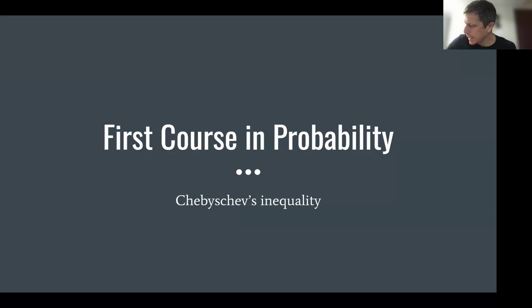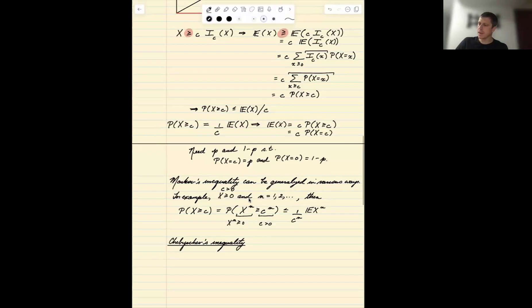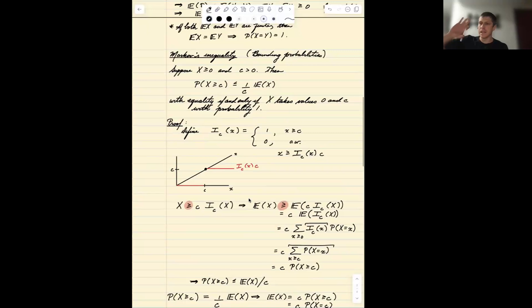Okay, so a consequence of Markov's inequality is another well-known inequality in probability called Chebyshev's inequality. Remember that Markov's inequality for a non-negative random variable told us that the probability of the extreme values, the big values of a random variable, has some relationship to the expectation.